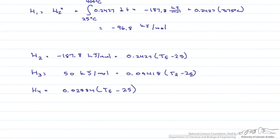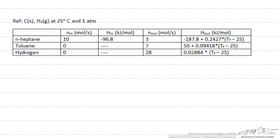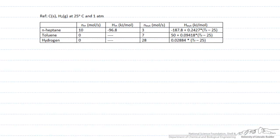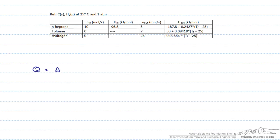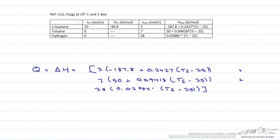Now let's put these enthalpies back into the table. Next we enter these values in our energy balance. Q equals delta H equals the sum of the enthalpies coming out minus the sum of the enthalpies coming in. Here are the enthalpies of the products coming out. This first one is the heptane, the second is the toluene, and finally the hydrogen. We sum these up and subtract the enthalpies in, which is the 10 moles per second of heptane that comes in times its enthalpy.